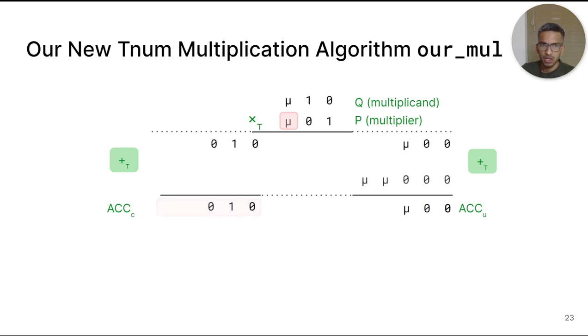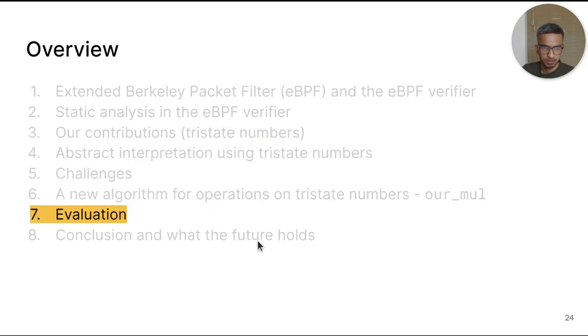When the least significant trit of P is mu, ACK_C remains unchanged. However, ACK_U accumulates a TNUM with all of Q's 1 trits set to mu. Q when left shifted by its place value is mu 1 0 0 0 and when multiplied by mu gives mu mu 0 0 0. When this partial product is added to the accumulator, we get mu mu mu 0 0. Our_mul finally returns the TNUM addition of ACK_C and ACK_U. We also observe that ACK_C only does addition of concrete partial products and this can be turned into a single efficient multiplication operation. Thus, our_mul also accumulates roughly 2N partial products by TNUM addition. Our_mul is faster and generally more precise than the Kernel's prior algorithm and other known algorithms. These benefits arise from the number and order of the abstract partial products considered by our_mul.